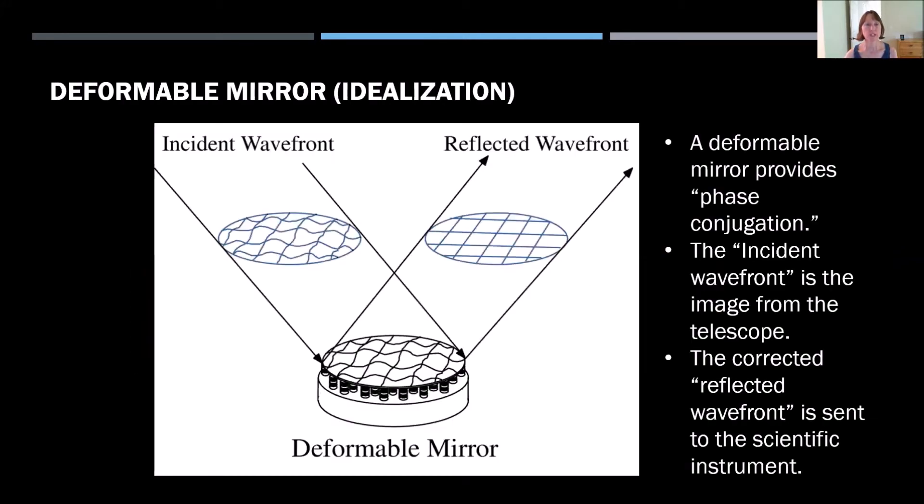So in 2D, you can see the image that would be hitting the telescope, and it's all warped and rippled. And then we have this deformable mirror that has the ripples that are exactly conjugate or opposite of that. So what's reflected off of it is a corrected wavelength, and this is what we would send to the scientific instrument.